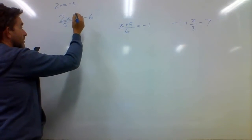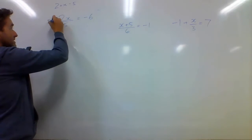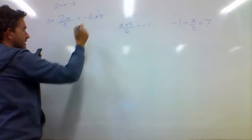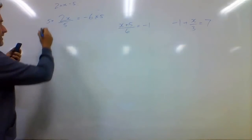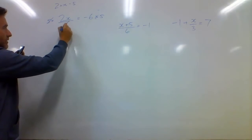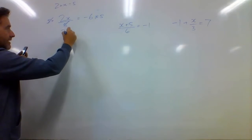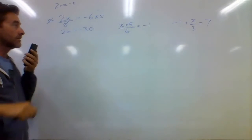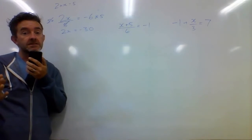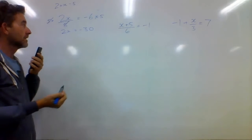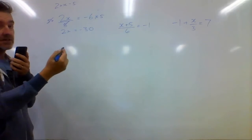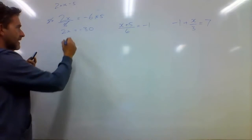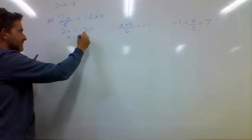So if I do that on both sides — if I multiply this side by 5 and that side by 5, remembering that I've got to keep it equal — then that 5 and that 5 will cancel out and I'll be left with 2x being equal to negative 30. 2 times x equals negative 30, so x is going to be half of negative 30. x will equal negative 15.